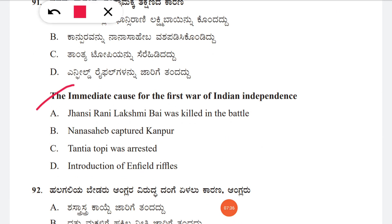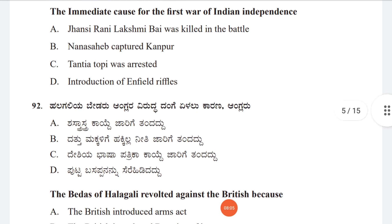Question 91: The immediate cause for the first war of Indian independence — option A: Jhansi Rani Laxmibai was killed in battle, B: Nana Sahib captured Kanpur, C: Tatia Tope was arrested, D: introduction of Enfield rifles. The correct answer is D, introduction of Enfield rifles.